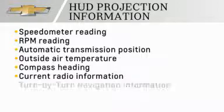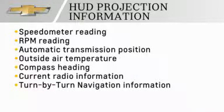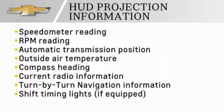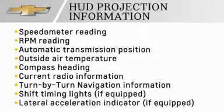It will also display turn-by-turn navigation information if the vehicle has available OnStar. The shift timing lights and a lateral acceleration or G-force indicator may also appear if the vehicle is equipped. In addition, select warning messages and driver information may appear on the display.